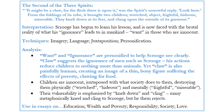'Claw' suggests the ignorance of men such as Scrooge — his actions reduce children to nothing more than animals. Yet 'claw' is also painfully human, creating an image of a thin, bony figure suffering the effects of poverty, clawing for food. The dehumanisation of the poor is enhanced by the description of 'flesh', taking away all identity from them. Indeed, the spirit's answer to Scrooge — 'it might be a claw' — reinforces the indescribable nature of the children. This intensifies the reader's response when we discover they are two children. The juxtaposition between the animalistic, fleshy 'claw' and the vulnerability of children is so extreme that it makes the spirit sorrowful, Scrooge appalled, and the reader deeply disturbed.